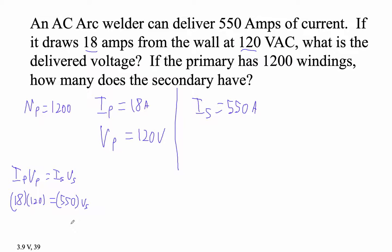So 18 times 120 divided by 550. The voltage on the secondary is a startling 3.927, and there's a lot of repeating 2s and 7s there, volts. So V secondary is 3.927 repeating volts. So let's see.